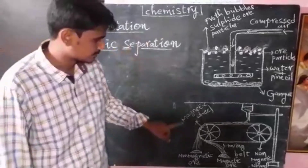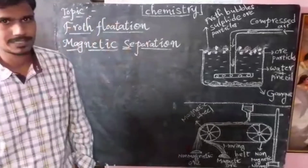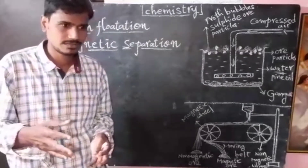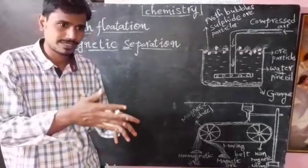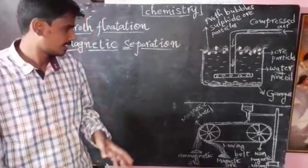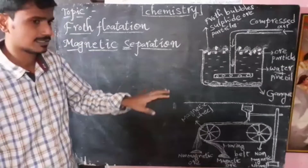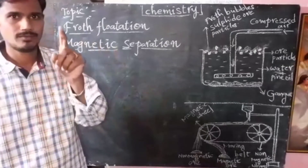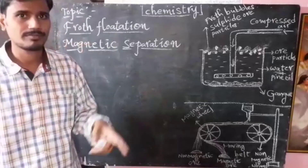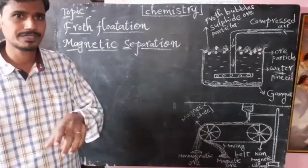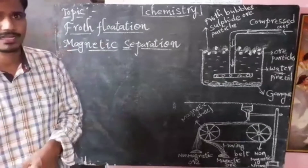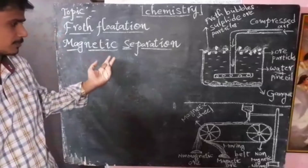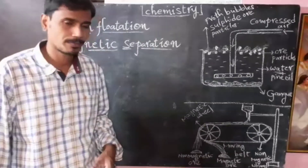The next method is magnetic separation. In this process, if you take any ore which contains some metal and some impurity, one of them — either the ore or the impurity — should be a magnetic substance and the other should be a non-magnetic substance. Based on whether the ore or impurity is magnetic or non-magnetic, we can separate the ore particles from the impurities.